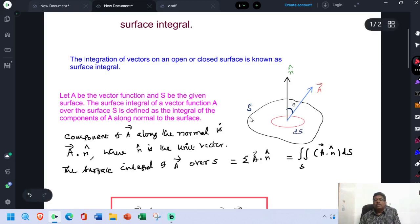See this surface. S is the closed surface and A is the vector function. The surface S is separated into so many smaller surfaces.